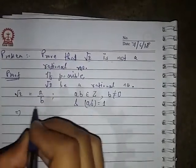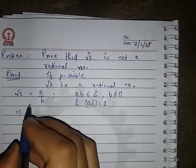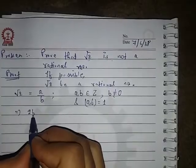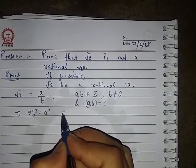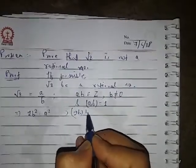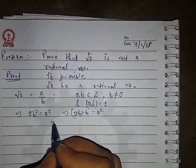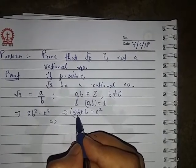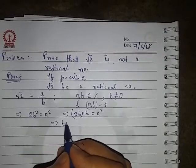So from this equation, if we square both sides, then we get 2 times b squared is equal to a squared. We can write it as 2b times b is equal to a squared. If we assume 2b as a constant, then b divides a squared.